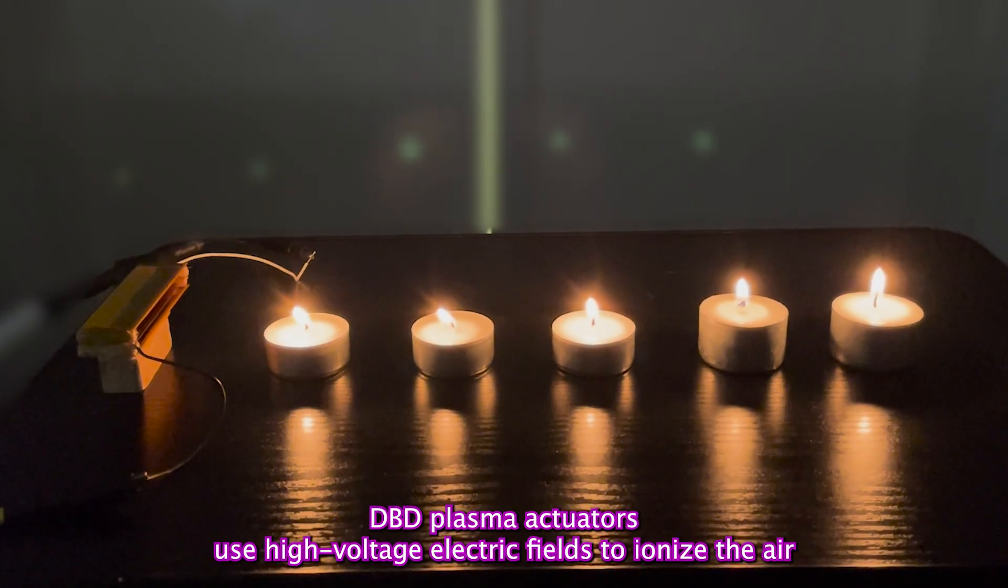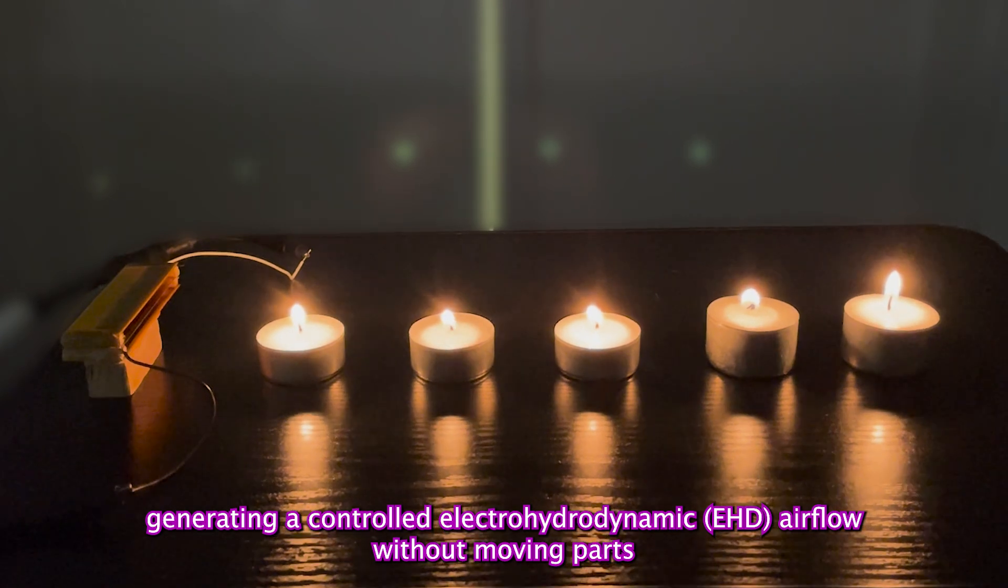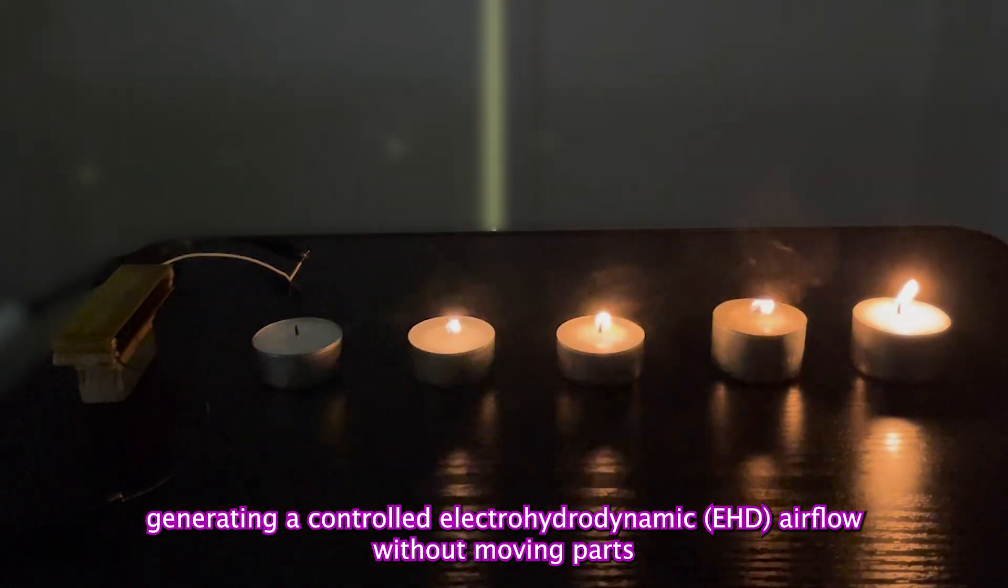DBD plasma actuators use high-voltage electric fields to ionize the air, generating a controlled electrohydrodynamic (EHD) airflow without moving parts.